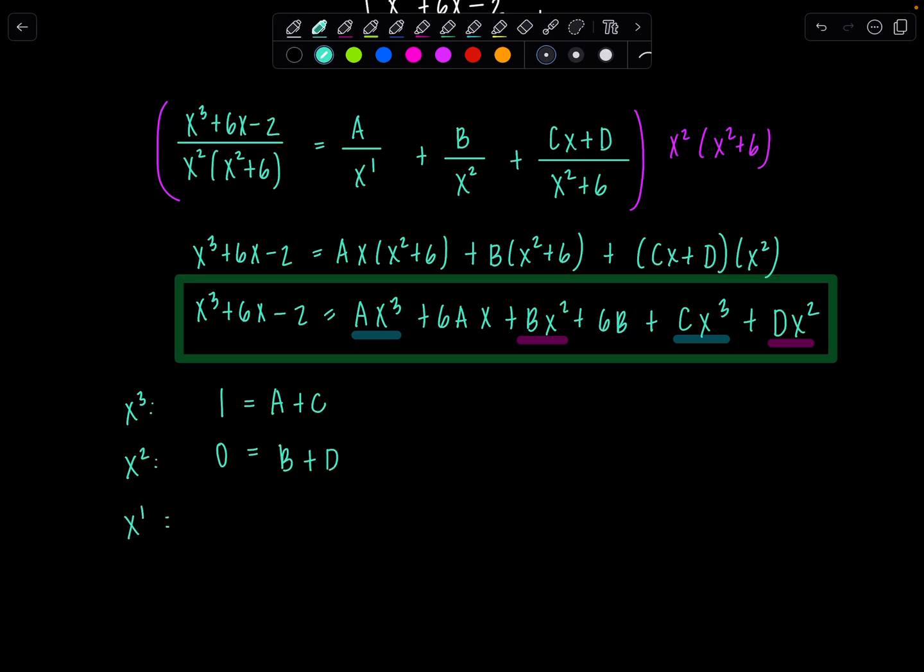x to the first, we got 6x to the first on the left-hand side, so that has to equal 6A. That's it. And then lastly, our constants. We have negative 2 on the left. That has to equal 6B.